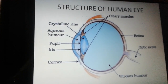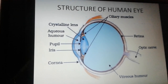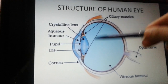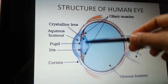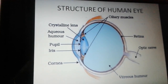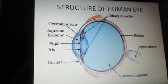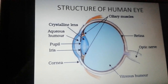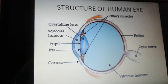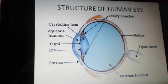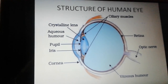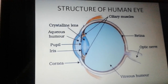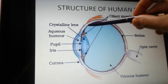The next important part is the ciliary muscles. As you can see, these are the two points marked in the diagram. Ciliary muscles are responsible for holding the eye lens in its position and also play a very important role in seeing near and far objects. The eye lens needs to adjust its focal length, and that is done by the ciliary muscles.